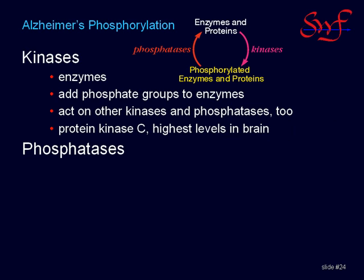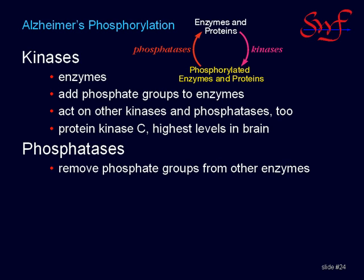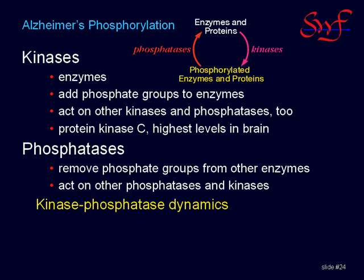Protein kinase C is just one of the sulfhydryl-based kinases that is inhibited by mercury and in Alzheimer's disease. Protein kinase C is most highly expressed in brain tissue. Phosphatases work oppositely to kinases — they remove phosphate groups from enzymes and, like kinases, remove phosphate groups from other phosphatases and kinases, which can undo the activity alterations accomplished by the kinases. Because kinases can upregulate and downregulate the activities of other kinases and up and downregulate the activities of their phosphatase counterparts, the kinase-phosphatase dynamic is not linear or stable.